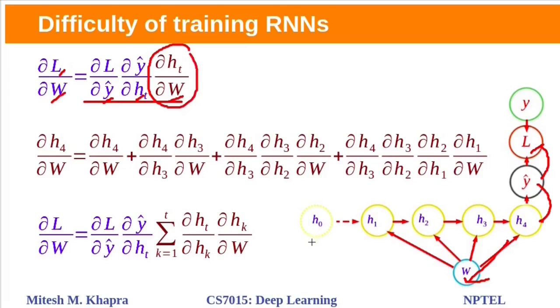Suppose if we have four time steps, the partial derivative with respect to w will be this one. This is the summation of all of these terms. Same thing can be written like this. We have seen this gradient calculation in previous class. For more details, you can refer previous class video.